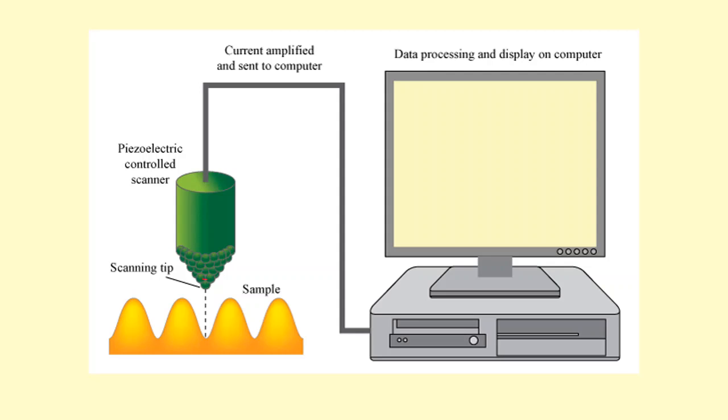A potential difference is applied between the sample and the tip, which means electrons can tunnel across this gap. The scanning tip is moved towards the right. As it moves left and right, the gap size decreases. Because the gap size is smaller, the probability that the electron will tunnel from the scanning tip to the sample is greater, so the current increases. This is used to make an image of the sample.